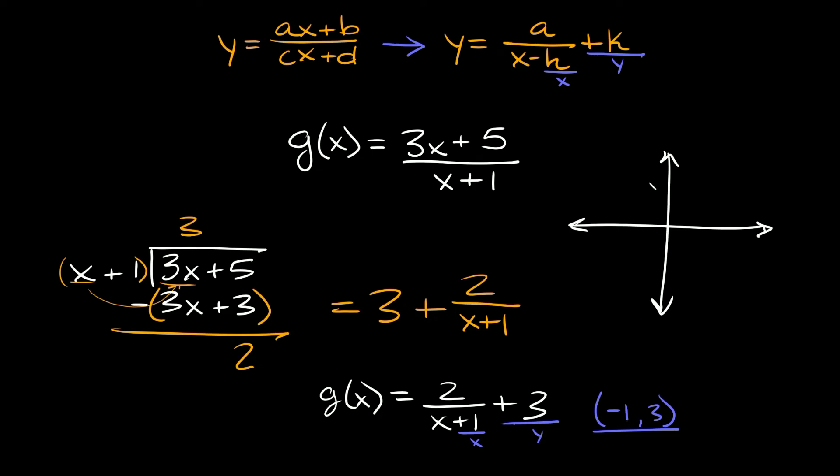Negative 1, 3. So negative 1, 3 let's just say it's about here. This point is where your vertical asymptote and your horizontal asymptote would run through. Okay and then again this is x is equal to negative 1 and this line is y is equal to positive 3.